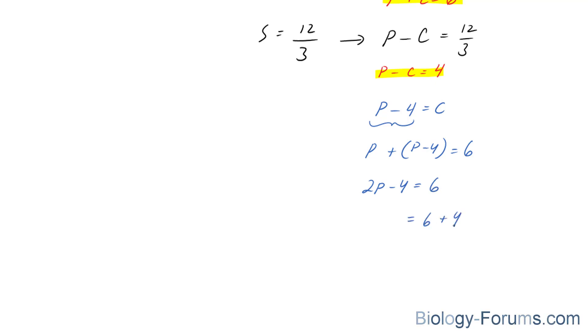P plus P is equal to 2P minus 4 is equal to 6. 6 plus 4, I'm just bringing this 4 over, is equal to 2P. 2P is equal to 10. And therefore, P is equal to 5. Divided both sides by 2.